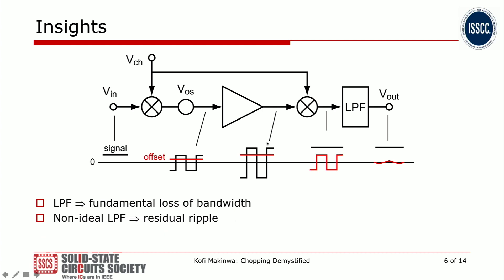Another insight we gain is that there is a low-pass filter at the output of this chopper amplifier, and that represents a fundamental loss of bandwidth. That's something that's fundamentally associated with the chopping technique. And because no low-pass filter is perfect, when you apply a square wave to an imperfect low-pass filter, there will always be a small amount of residual ripple at the output of the chopper amplifier. You have to design the low-pass filter and choose the chopping frequency so that this ripple is negligible.